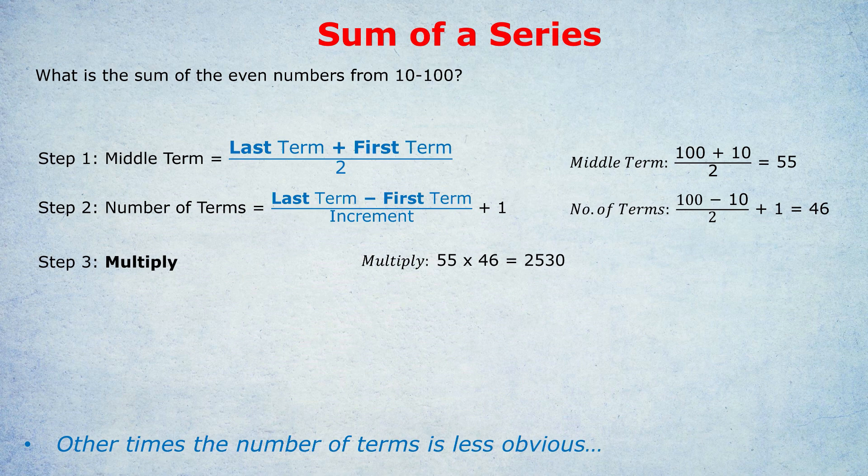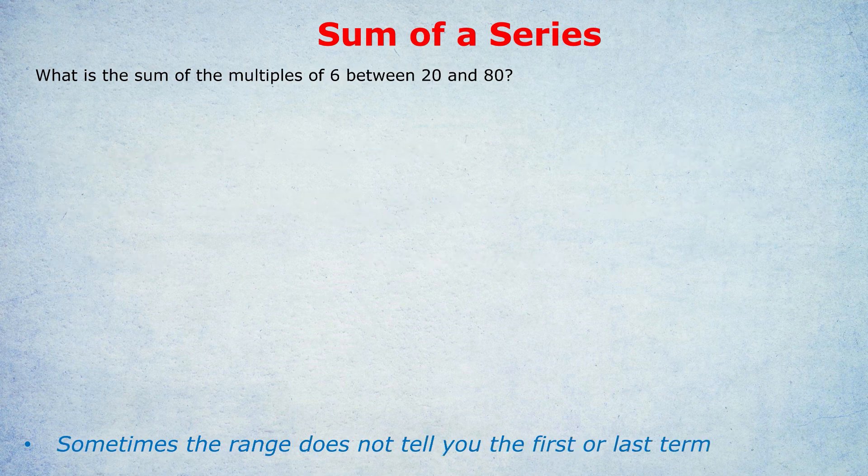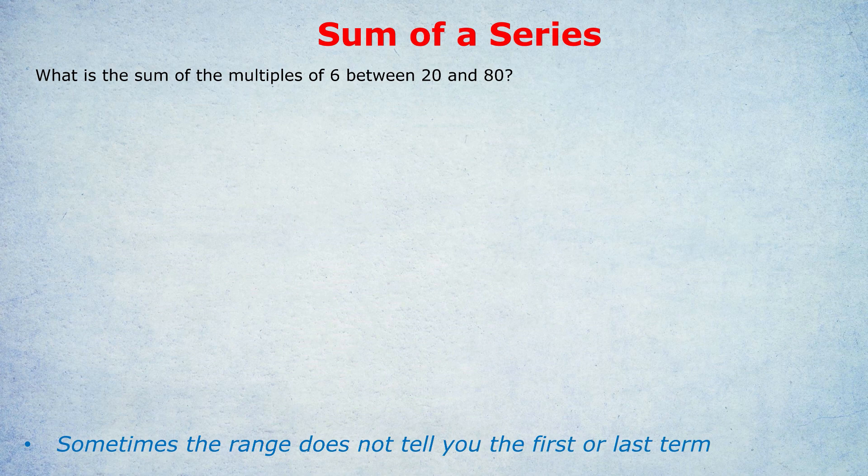Okay, let's do an even harder example. What is the sum of the multiples of 6 between 20 and 80? Okay, well here, the actual hard thing is to find out what the first term and the last term is. Some of you are thinking, well, isn't the first term 20 and the last term 80? No, because we only want the multiples of 6. And neither 20 nor 80 are multiples of 6.